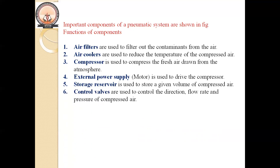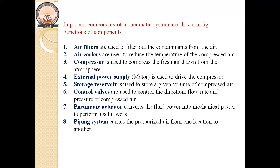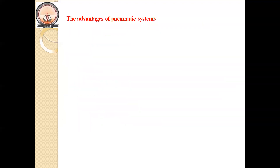Control valves are used to control the direction, flow rate, or pressure. As mentioned, there are three types: directional control valve (DCV), pressure control valve, and flow rate control valve. The pneumatic actuator converts fluid power — that is, compressed air pressure — into mechanical power to perform useful work. The piping system carries the pressurized air from one location to another.